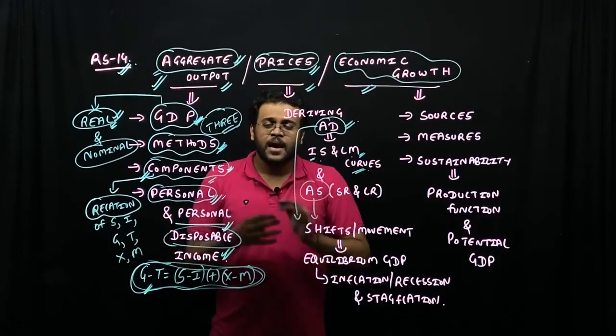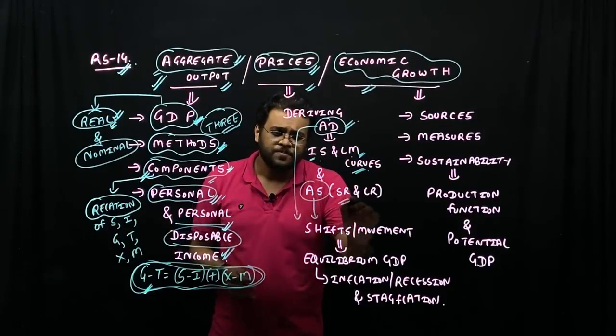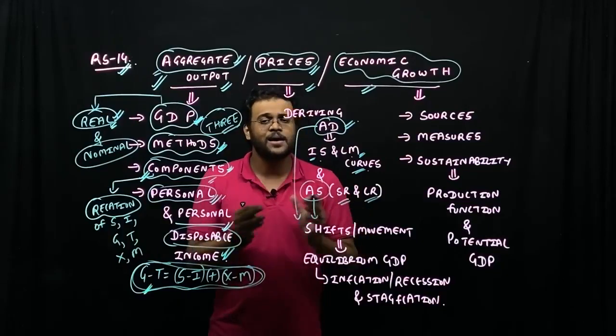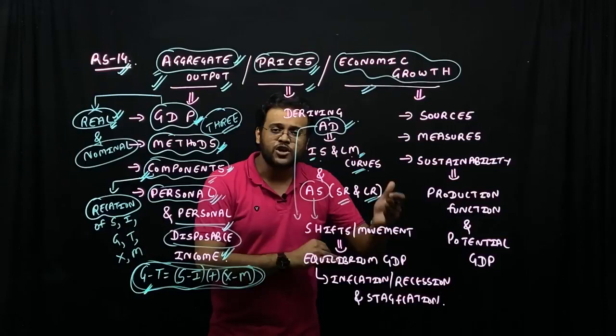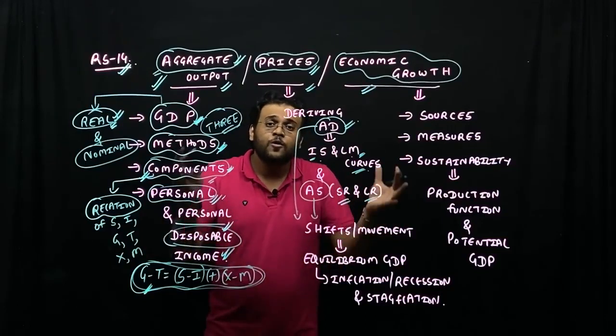That is price against real GDP of the country. After aggregate demand, we have aggregate supply—aggregate supply in the short run as well as long run: SRAS and LRAS. So aggregate demand, then aggregate supply short run and long run, and then combine them.